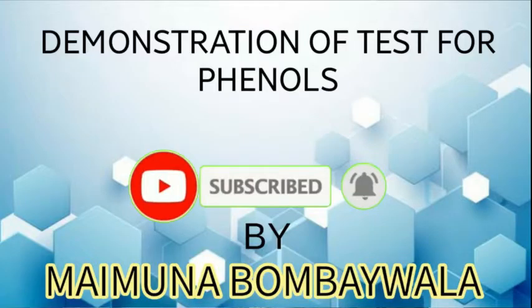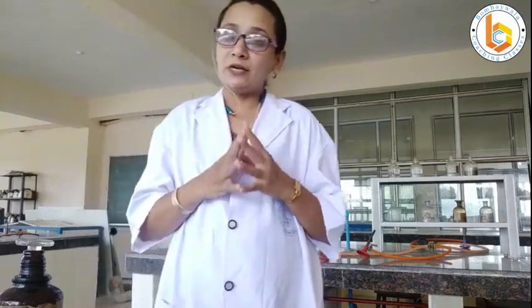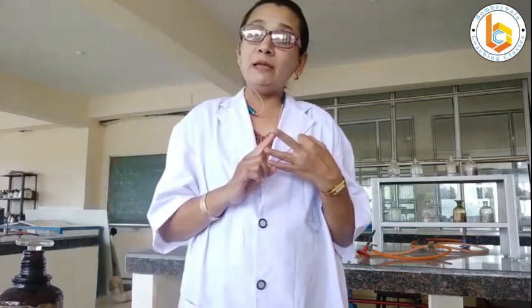Hello dear students, this is your guide and mentor for organic chemistry. Today we are going to see the tests for phenols. Instead of just understanding it theoretically, let us see it practically and see what the color reactions are to prove the presence of phenols. We are going to study four tests: the solubility test, the ferric chloride test, the Liberman test, and the bromine water test.